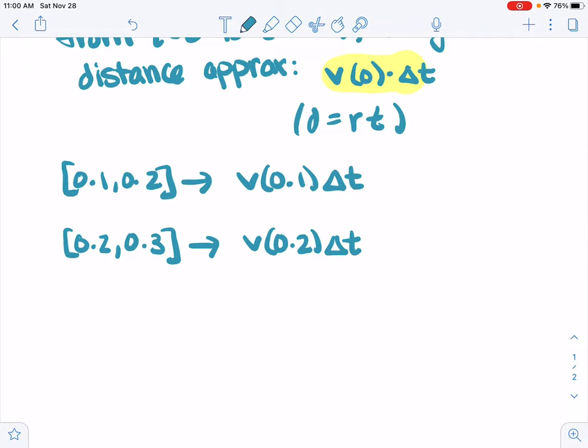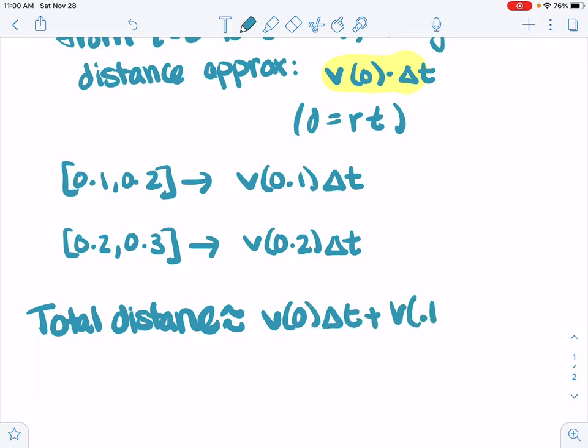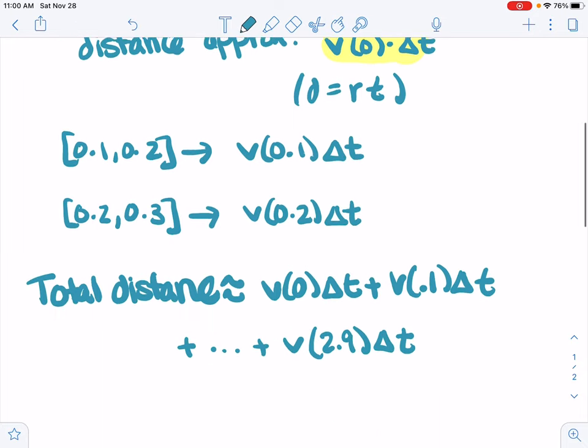So we continue, and then our total distance is approximately v at time 0 times delta t plus v at time 0.1 times delta t plus dot dot dot plus v at 2.9 times delta t. And that would represent our approximate distance traveled over the time interval 2.9 to 3.